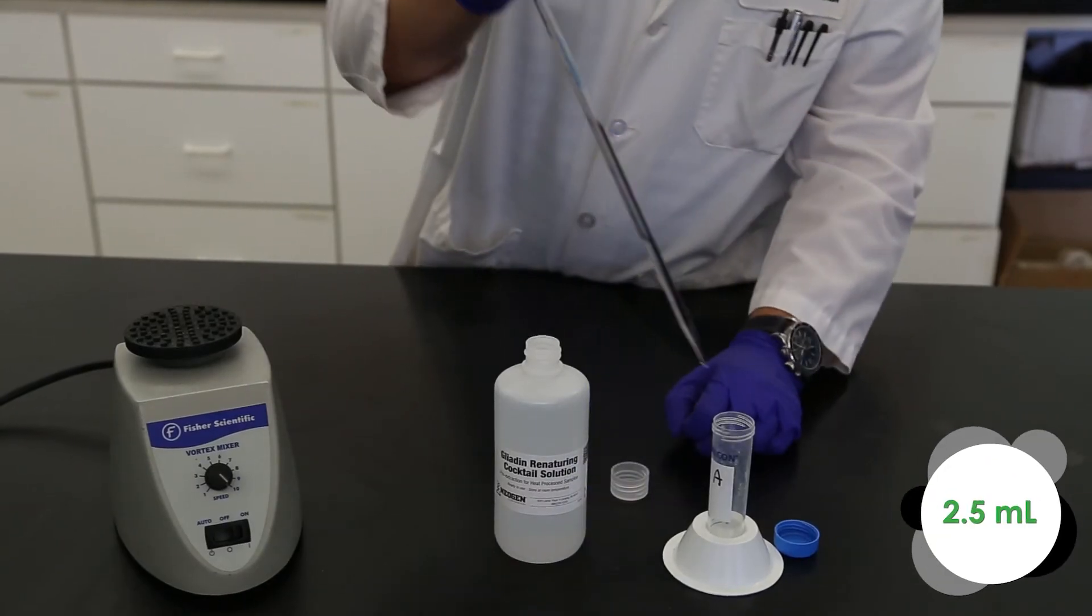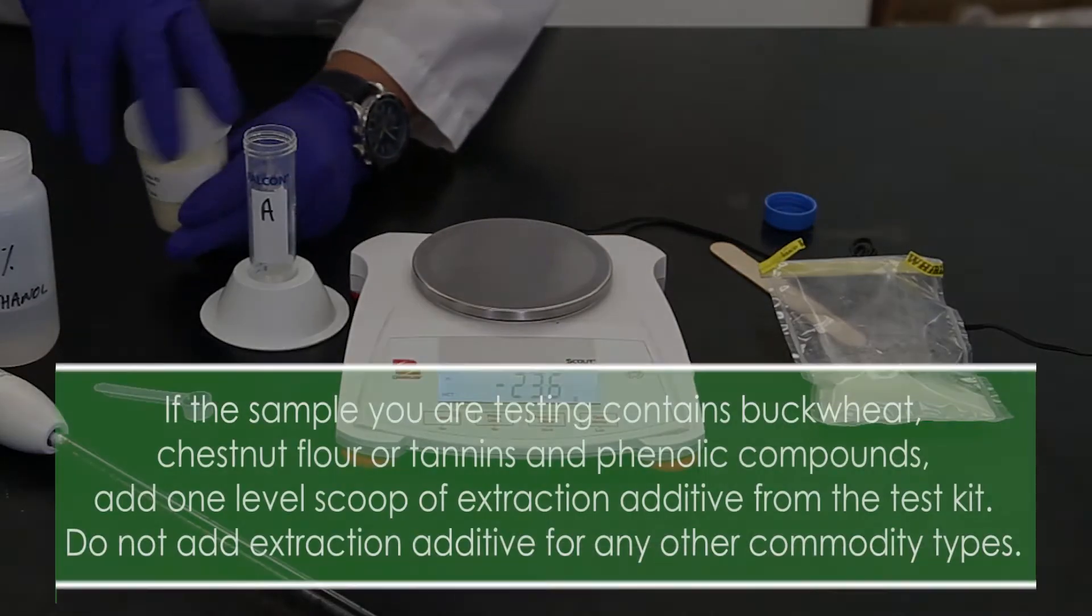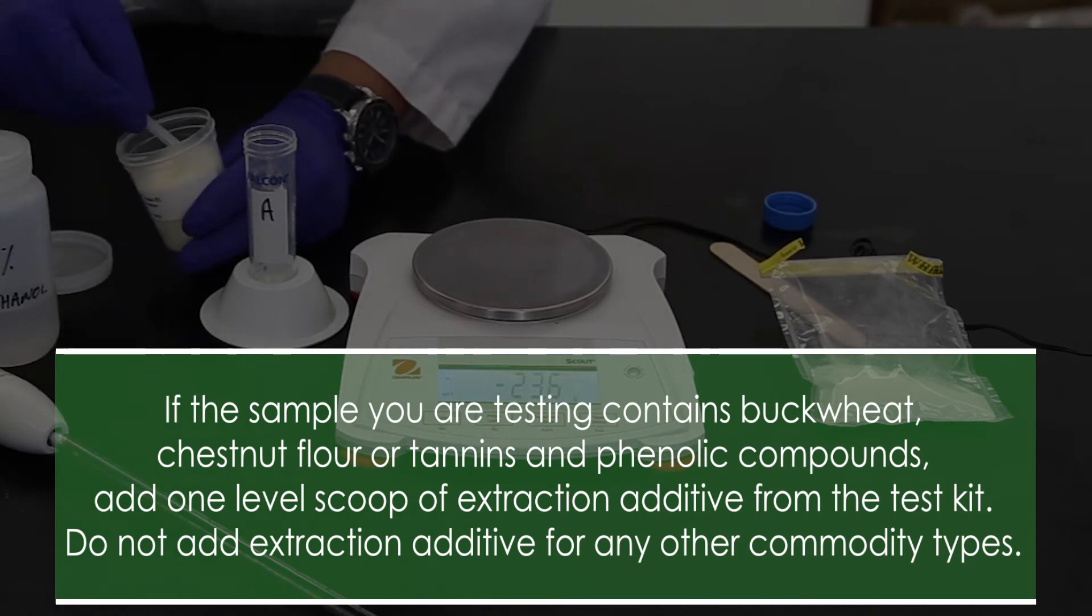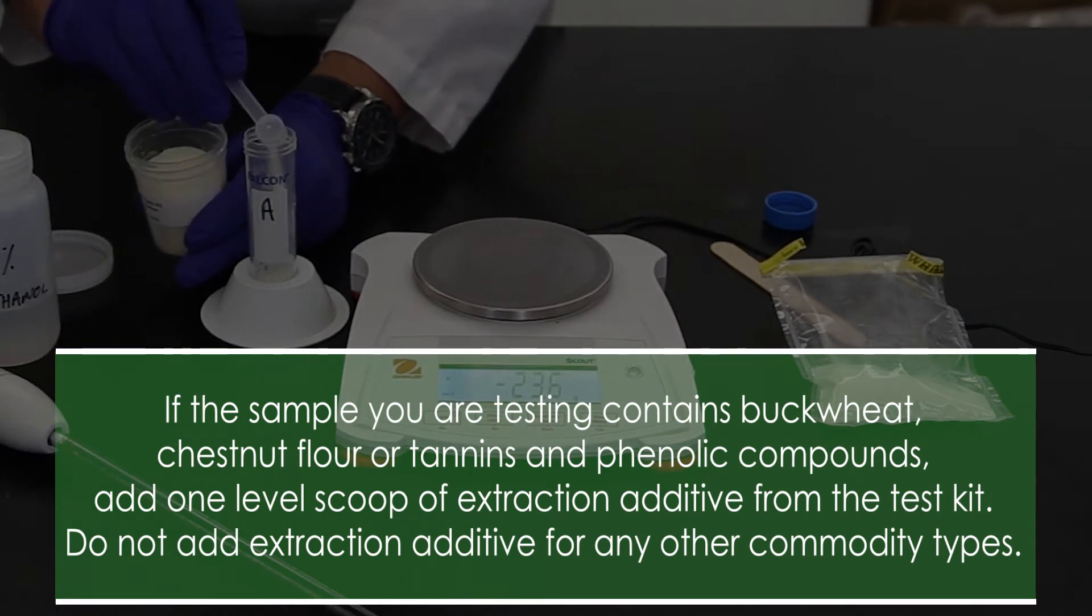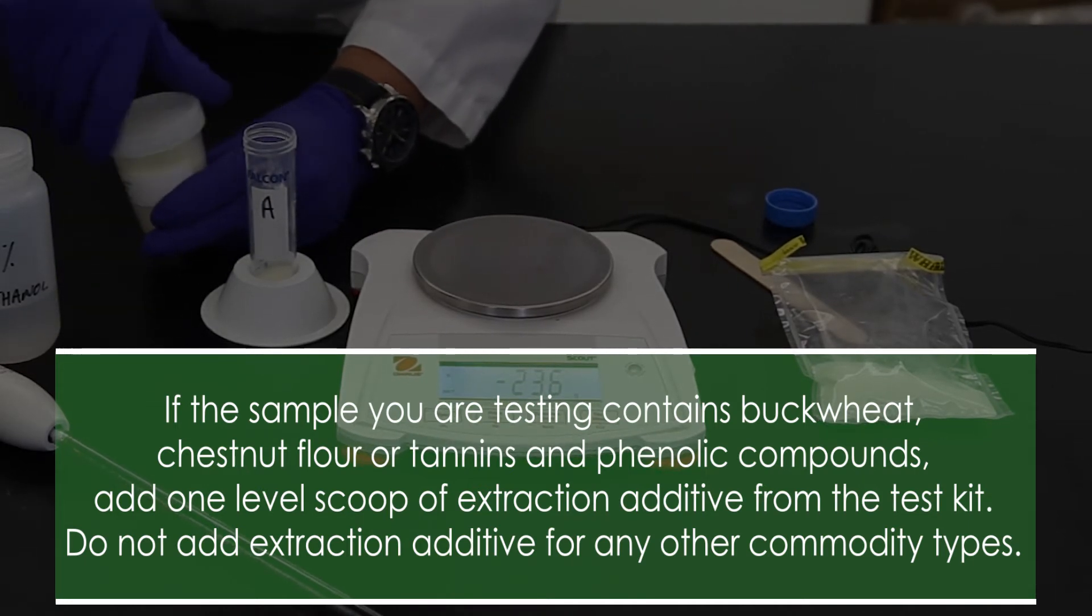Add 2.5 milliliters of Renaturing Cocktail Solution to the sample. If the sample you are testing contains buckwheat, chestnut flour, or tannins and phenolic compounds, add 1 level scoop of extraction additive from the test kit. Do not add extraction additive for any other commodity types.